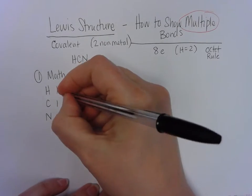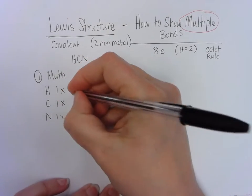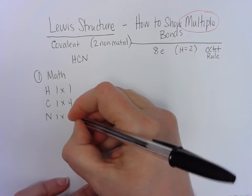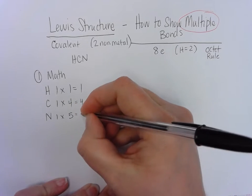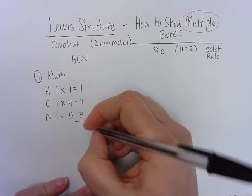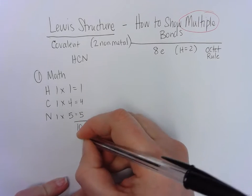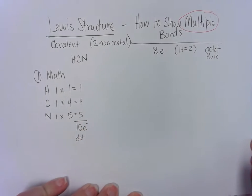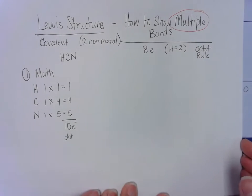If you don't remember how to find the valence electrons, make sure you ask somebody for some help. When you do this math, this is going to indicate that we need 10 electrons or 10 dots in our picture. Okay, we'll come back to that later.